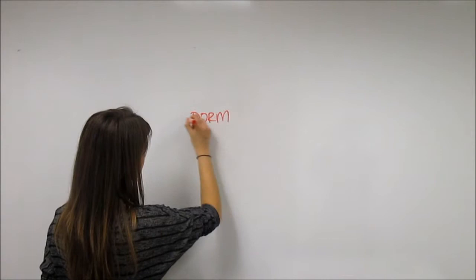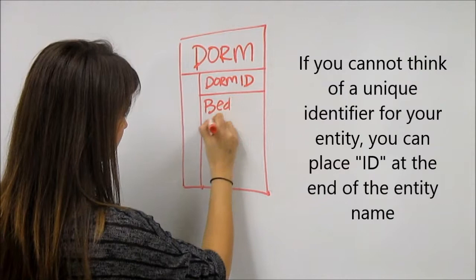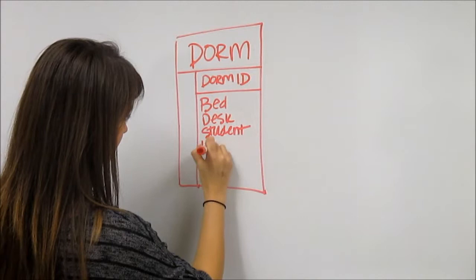Now we're going to take you through an example of an ER diagram of a dorm room. Begin by writing the title of the first entity and the parent table, dorm, at the top of the entity. Next, identify the primary key, in this case dorm ID. Underneath the primary key, list the attributes of the entity. In this case, we will be using bed, desk, student, housekeeping, and key.